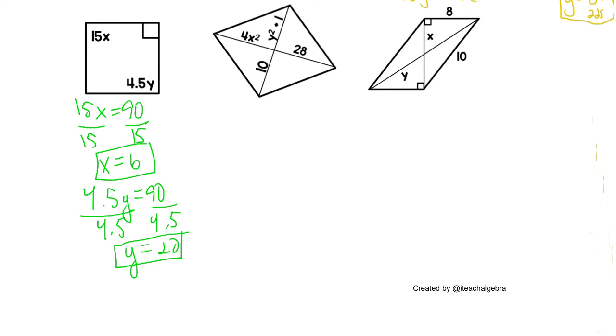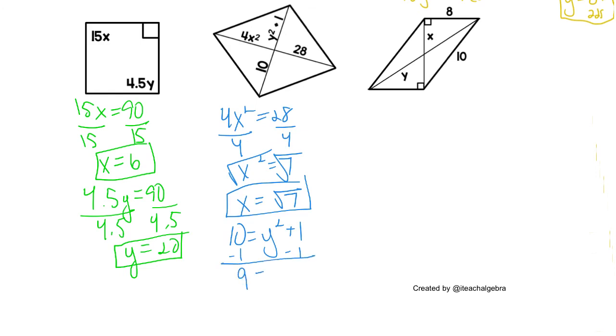Next, we know that if we make diagonals through each angle, then they are bisectors of each other. So we can say that 4X squared equals 28. Divide by 4, and we get X squared is 7. Take the square root of each side to get rid of that square, and X is the square root of 7. We also say that 10 equals Y squared plus 1. We get Y all alone. Y squared is 9. We take the square root of each side. That means Y is plus or minus 3.